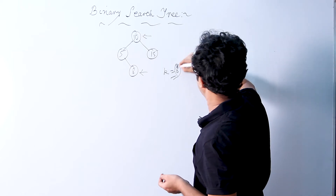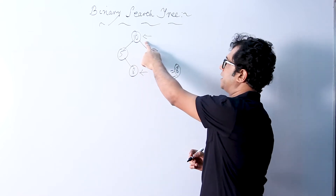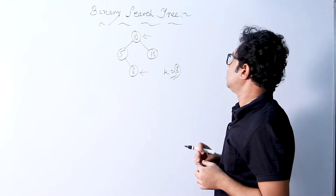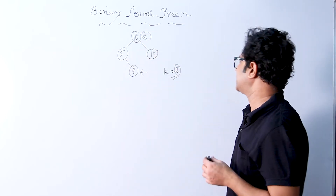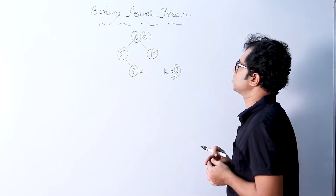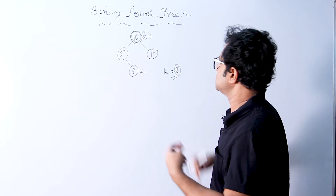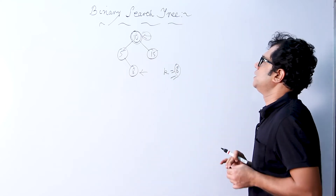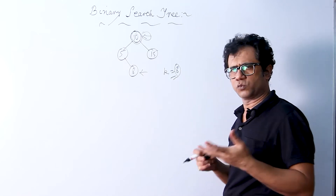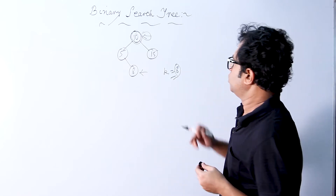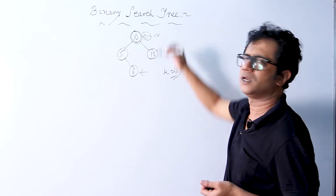We will compare this key value with the root node value, that is 10. If the value matches at the root node, then the search operation ends at that point and we do not need to go into further search. We will return 1 if a successful search is found. If the search results in a failure, we return 0. So if we find 8 at the root node, that would be a successful search in the first step and we return 1 immediately.